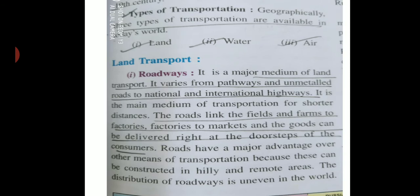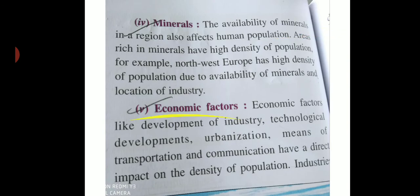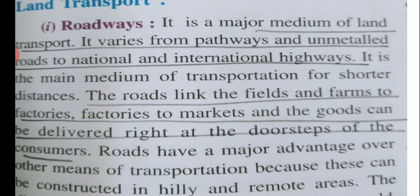Transportation is very important. There are three types - land, water, and air. For land transport, road transport is the most basic and important because it is the only mode by which we can go door to door. Roads include unmetalled (kachcha) roads and metalled (pakka) roads - from national highways to international highways, from villages to cities. Roads play a very important link in every field; goods are delivered to your doorstep through roads.